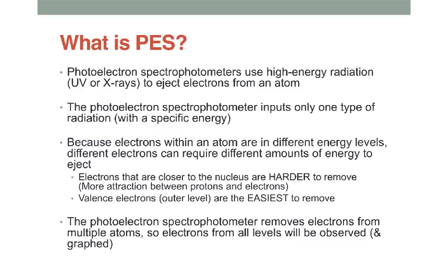Now, it takes a certain amount of energy to get the electron to leave the atom, and that's based on how many protons are holding it into the nucleus, and how close those electrons are to the nucleus, but whatever leftover energy there is can be detected as the kinetic energy of the electron when they leave.